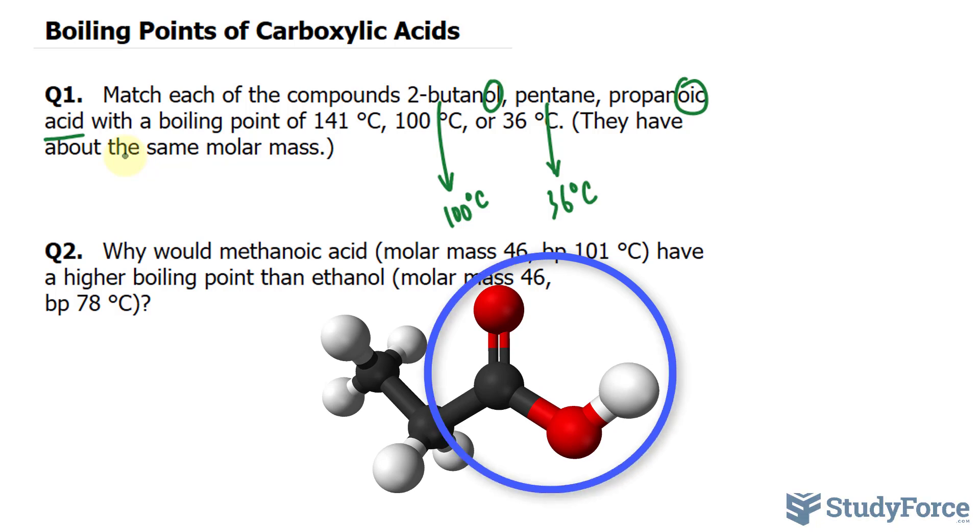And this is because the carboxyl group can form stable dimers through hydrogen bonding to increase their effective molar mass and their overall boiling points. So, 141 goes to propanoic acid.